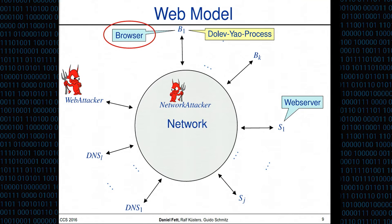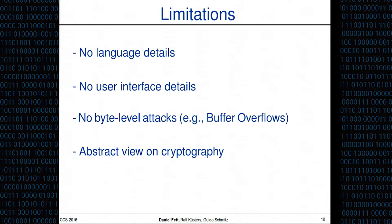The model is quite complex and comprehensive, but still of course it's a model, so there are some things we cannot model. We cannot talk about language details — for example, the syntax of JavaScript is out of scope, but we can capture the input and output behavior of JavaScript. We do not model user interface details such as iframes overlapping each other, so clickjacking attacks are not modeled. Byte-level attacks like buffer overflows are also out of scope, though we can capture their effects via dynamic corruption. As typical for a Dolev-Yao style model, we have an abstract view on cryptography — for example, we assume TLS just works.